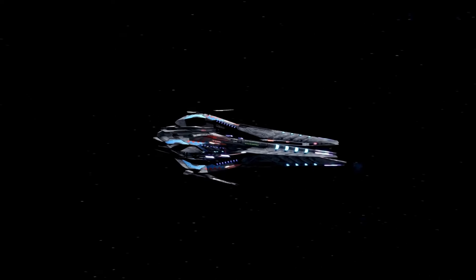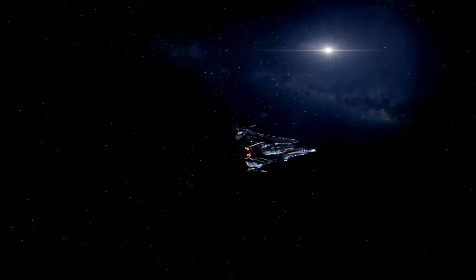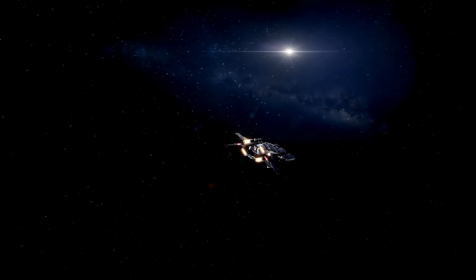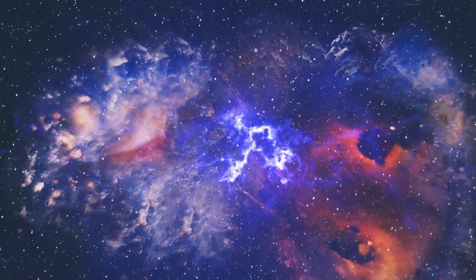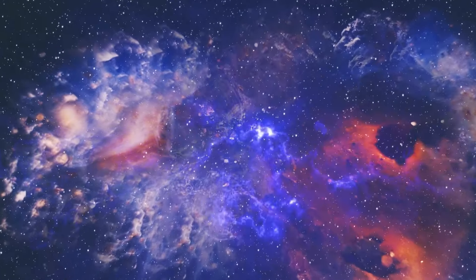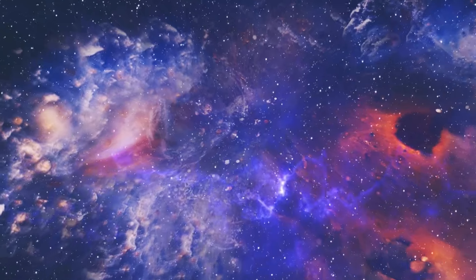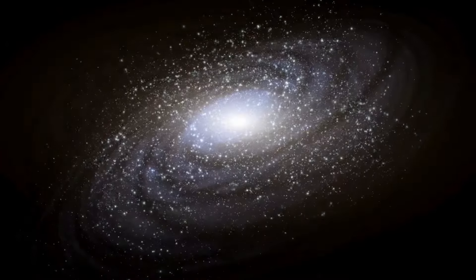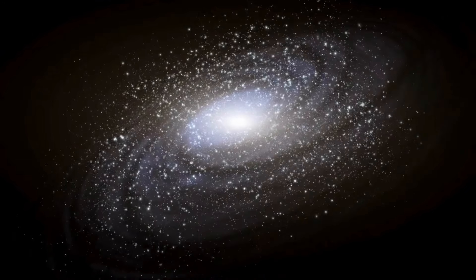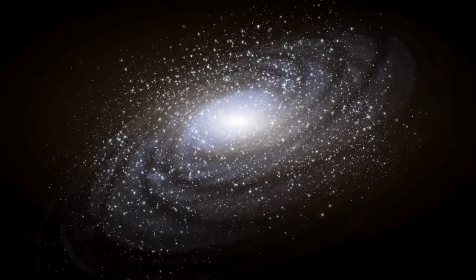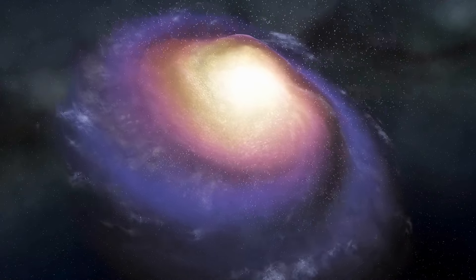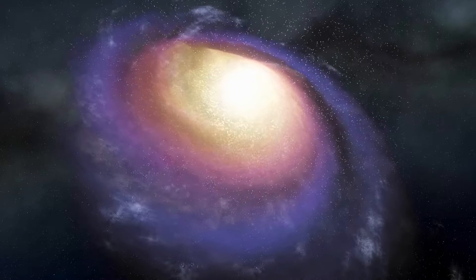Let's delve into Proxima Centauri b's host star. Orbiting the red dwarf Proxima Centauri, it forms part of the Alpha Centauri triple star system. This system comprises Rigel Centaurus or Centauri A, Toliman or Centauri B, and Proxima Centauri or Centauri C, making it the nearest star system to our own solar system. Rigel Centaurus and Toliman form the binary known as Alpha Centauri AB, appearing as one star in the constellation of Centaurus and ranking as the third brightest star in our night sky.